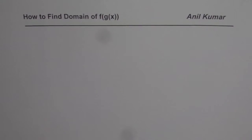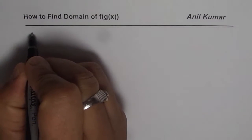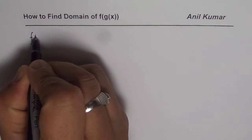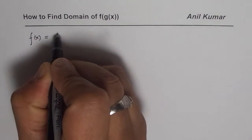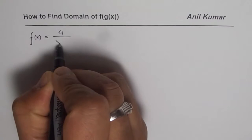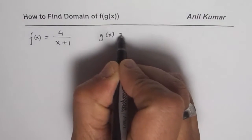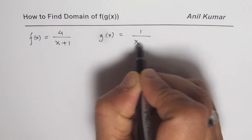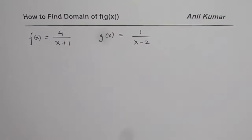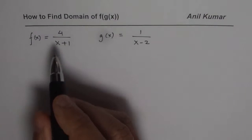I am Anil Kumar and in this video we will learn how to find the domain of a composite function. Let's define a composite function first. One of the functions is f(x) = 4/(x+1) and we have g(x) = 1/(x-2). These are the two functions we are working with, and let's first write down their domains.